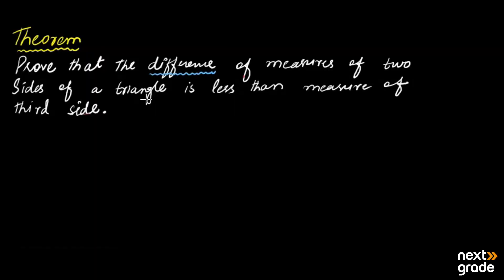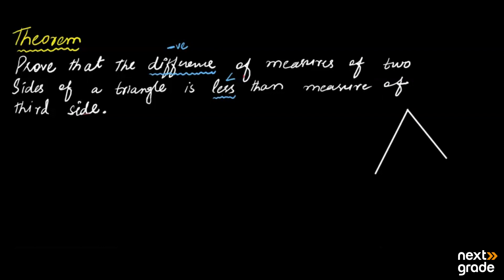It is given in the statement that we have to prove that the difference of measures of two sides of a triangle is less than the measure of the third side. For difference we will take a negative sign, and for less we will take the less-than symbol. We will take a triangle and prove the results for this triangle.